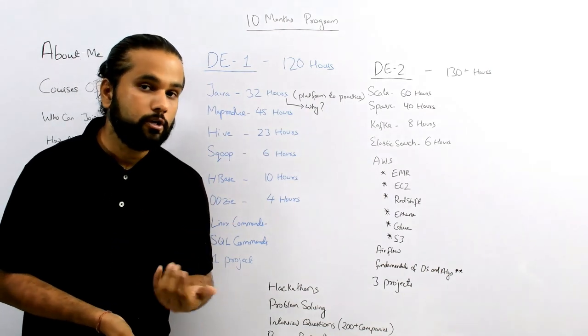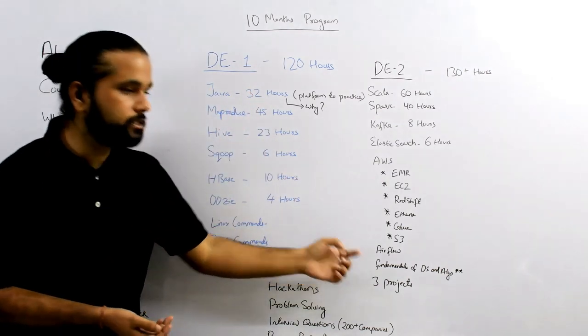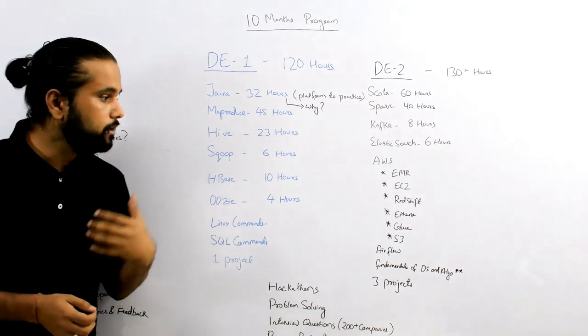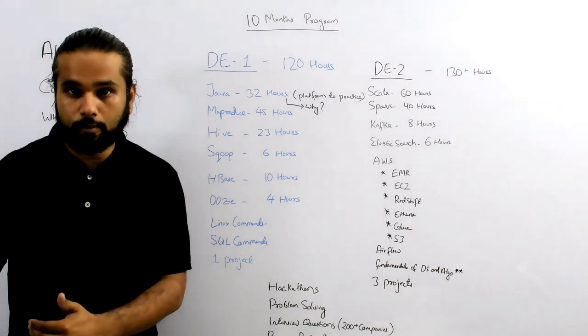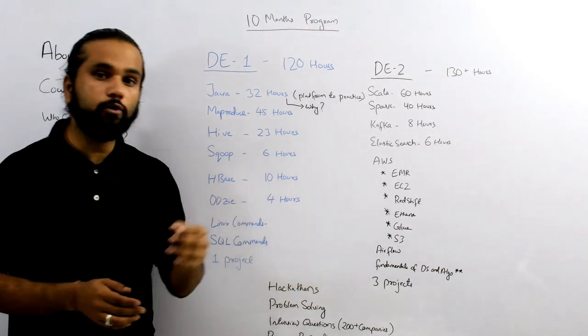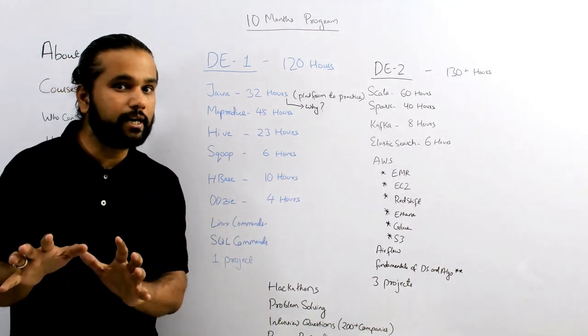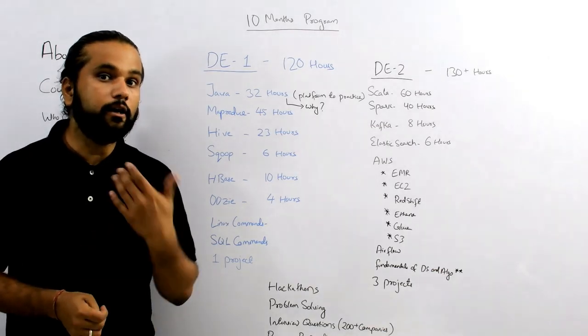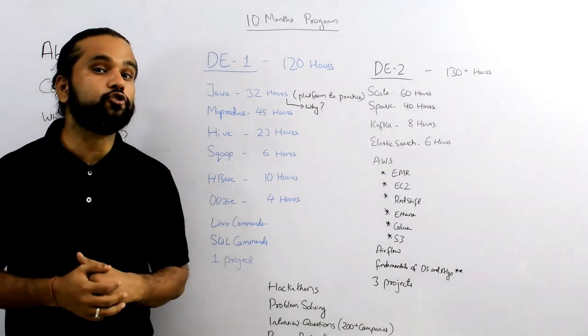Once you're done with DE1 and DE2, you may be interested in looking for jobs. We have another section called fundamentals of data structure and algorithm, where we'll talk about basic data structures and algorithms to help you get ready for product based companies. Every good company would test you with data structure and algorithm problems. We have a separate blog section where students contribute questions on data structure and algorithm, and we solve them together.